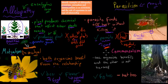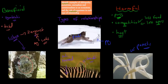Next is commensalism, where one organism benefits and the other is not harmed. The example of the zebra and the bird is usually considered commensalism. The bird gets food — it picks food off the back of the zebra. Sometimes the zebra does benefit, but often it's just not harmed. There's no disadvantage of having the bird pick it, but it's also not really benefiting. So the bird benefits but the actual zebra is not harmed — that's commensalism.